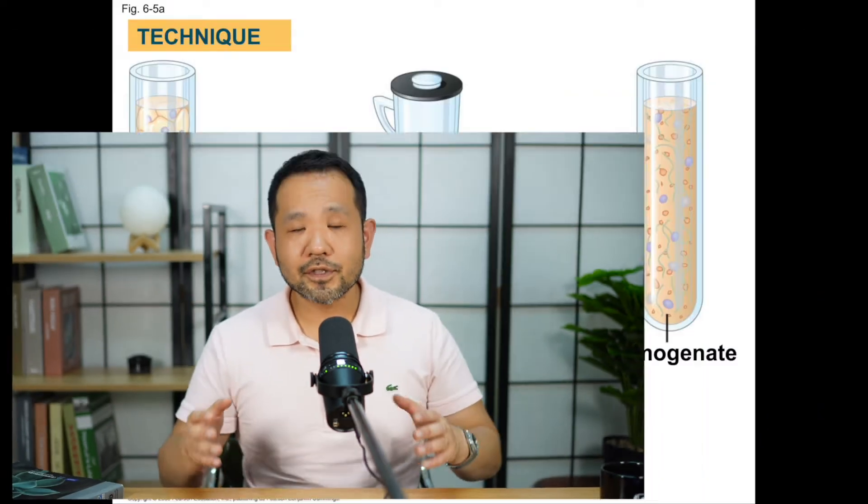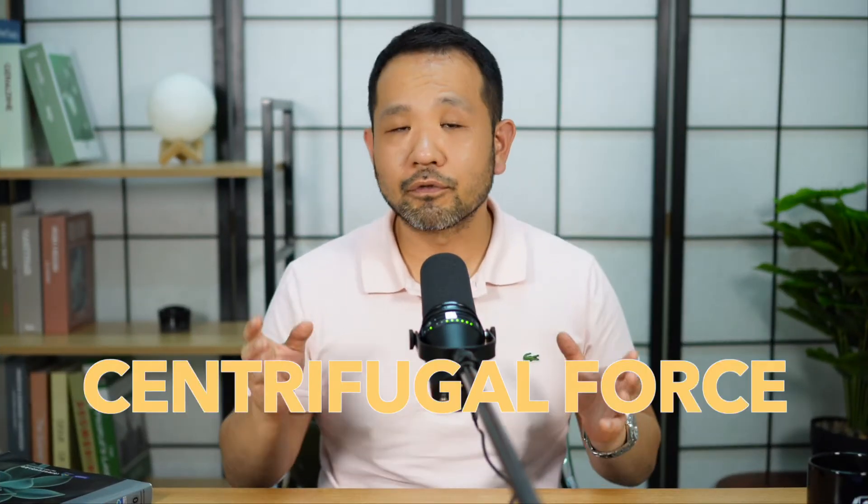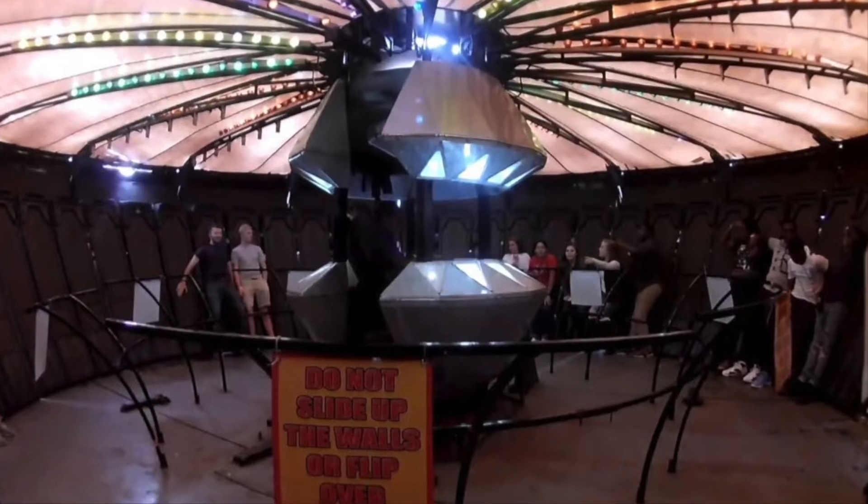Cell fractionation involves the multi-step centrifugation of the cell in order to separate different components by mass. To understand centrifugal force, think about a UFO ride at an amusement park — you stand against the outer wall, the whole thing spins, the floor drops, but you're still stuck on that wall. That is centrifugal force. If we're able to emulate that force, we can separate different materials inside the cell by mass.